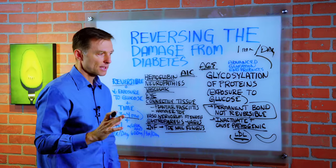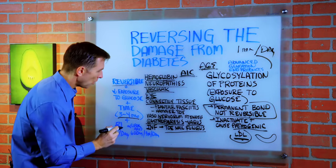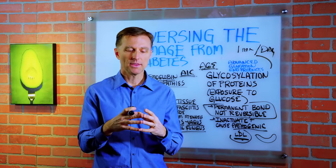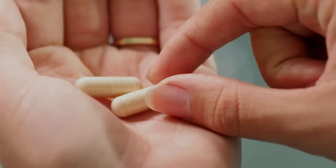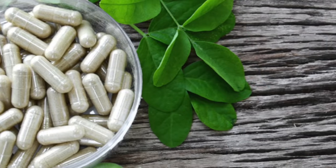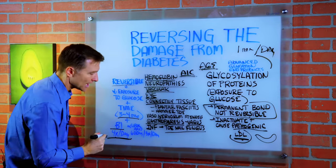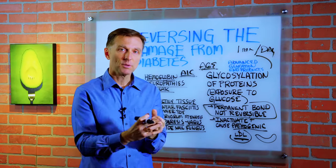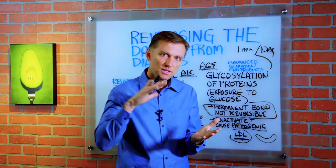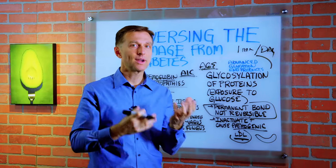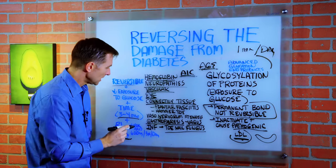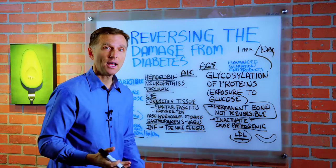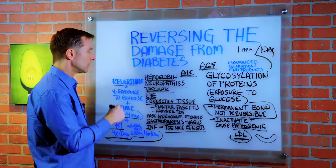There are two main nutrients I'm going to recommend that have been known to have great success with this. One is vitamin B1, but in a fat-soluble form called benfotiamine — I'll put the spelling down below so you can identify it. I would recommend taking higher amounts, about four capsules a day. Because it is fat-soluble, it can go into the nervous system and into the fat layer around the nerves called the myelin sheath much better — it absorbs into the brain 25 times better than regular B1. The next remedy is alpha lipoic acid — I would recommend 600 milligrams three times a day. That's a lot, but that's what you need to start speeding up the reversal of this damage.